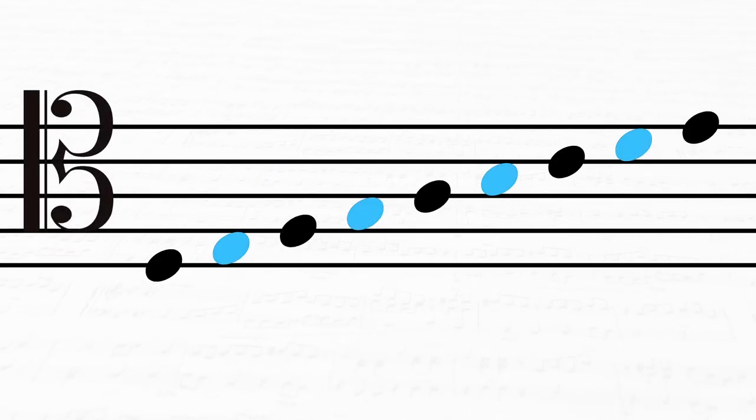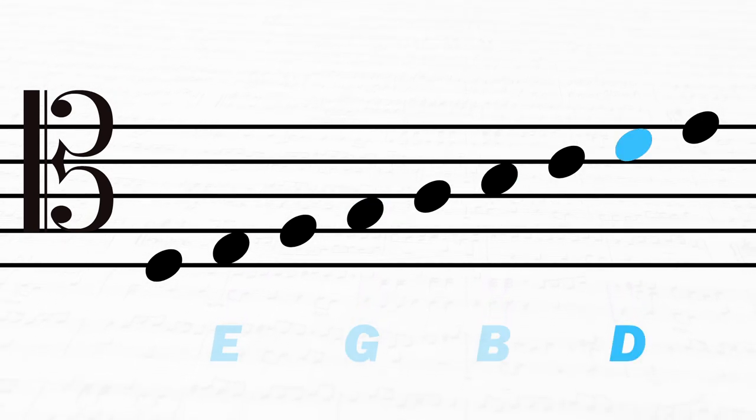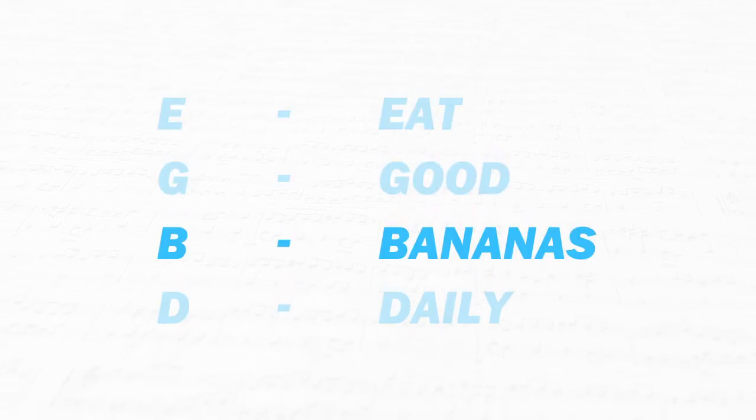Then on the flip side, if you look at just the notes we have in the spaces, we have E, G, B, and D. And to remember this one, we could use the acronym Eat Good Bananas Daily.